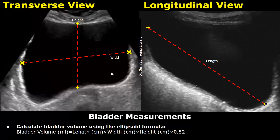After you have gotten the length, width, and height of the bladder, you can calculate the bladder volume using the ellipsoid formula: bladder volume = length × width × height × 0.52.